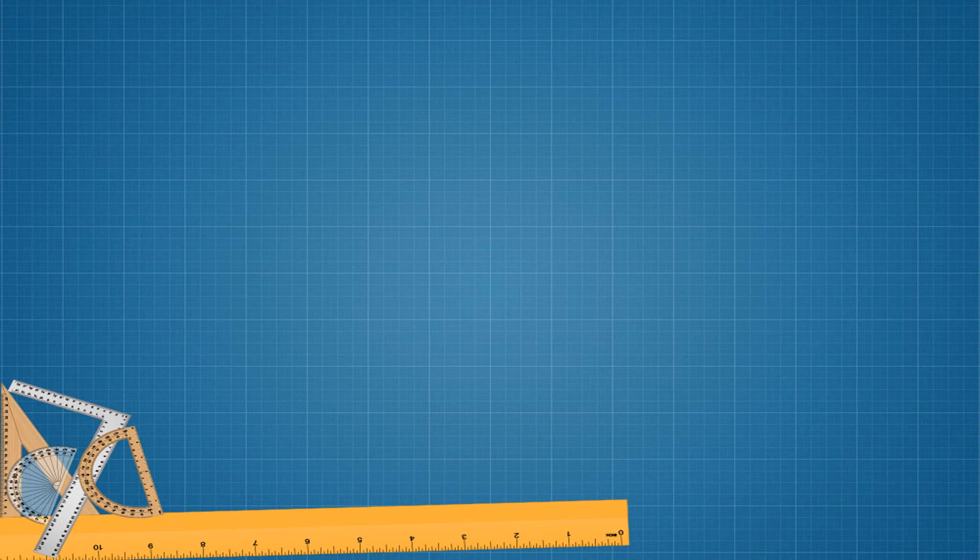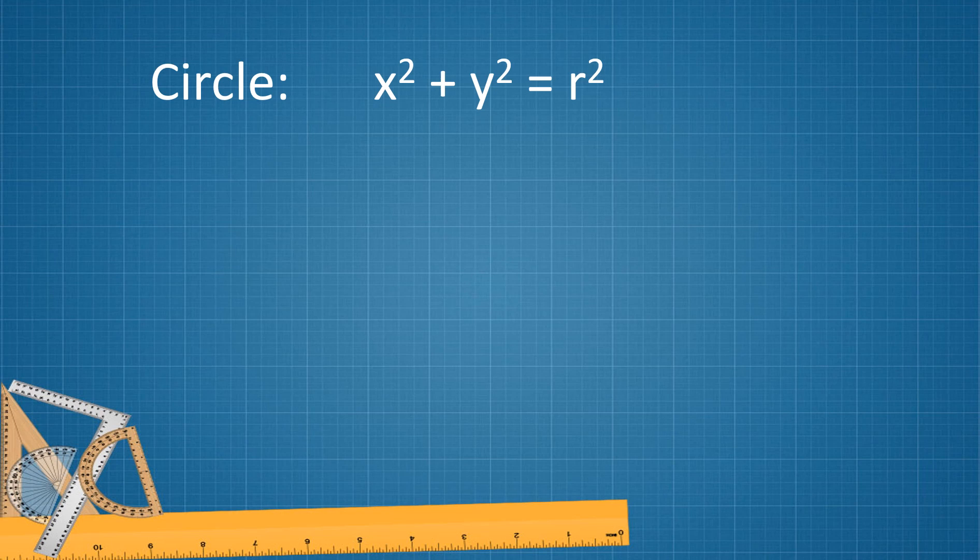Let's start with circle. Circle has a standard form of x squared plus y squared equals r squared, where r is greater than or equal to zero.